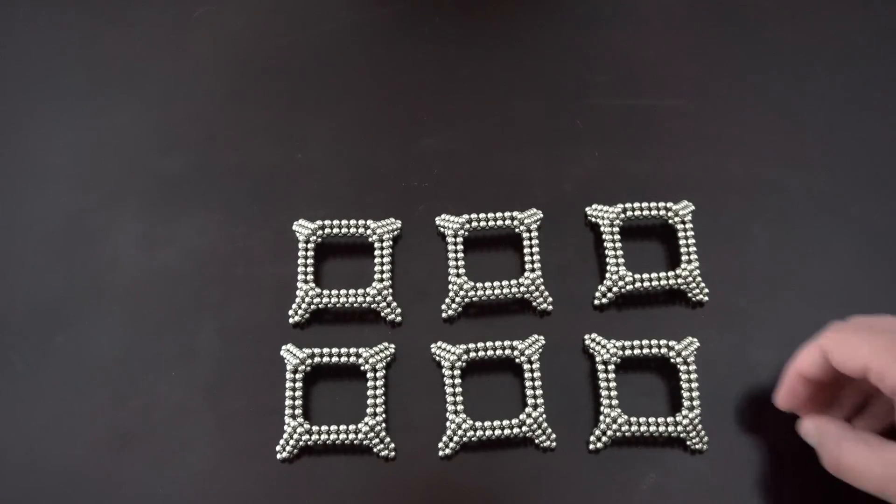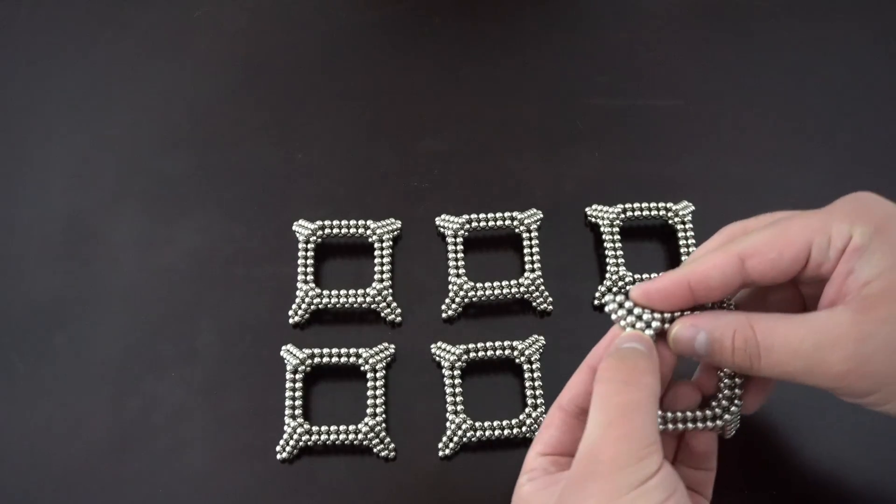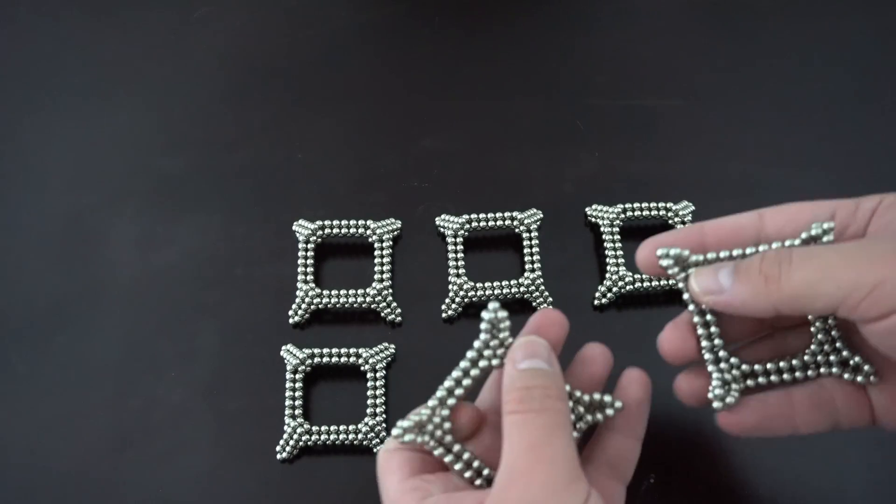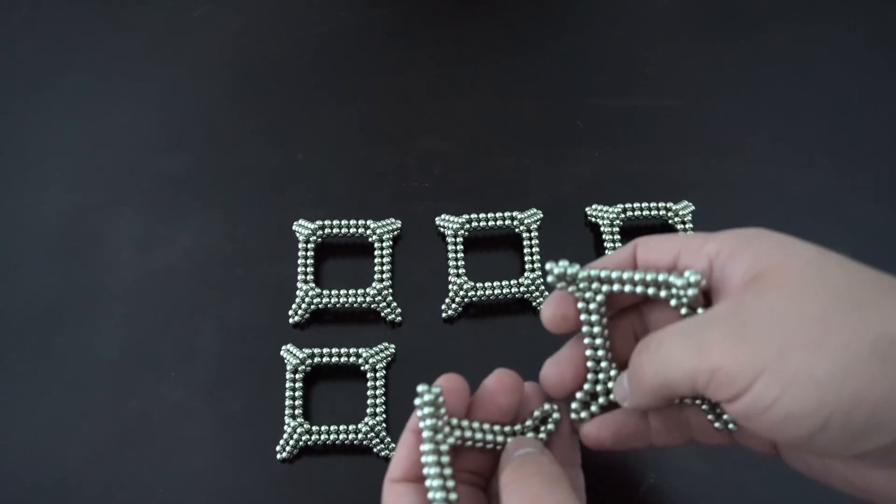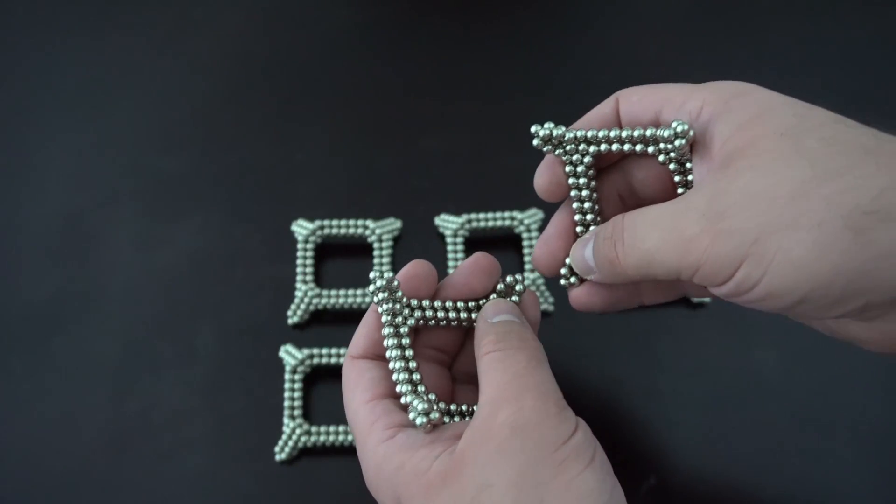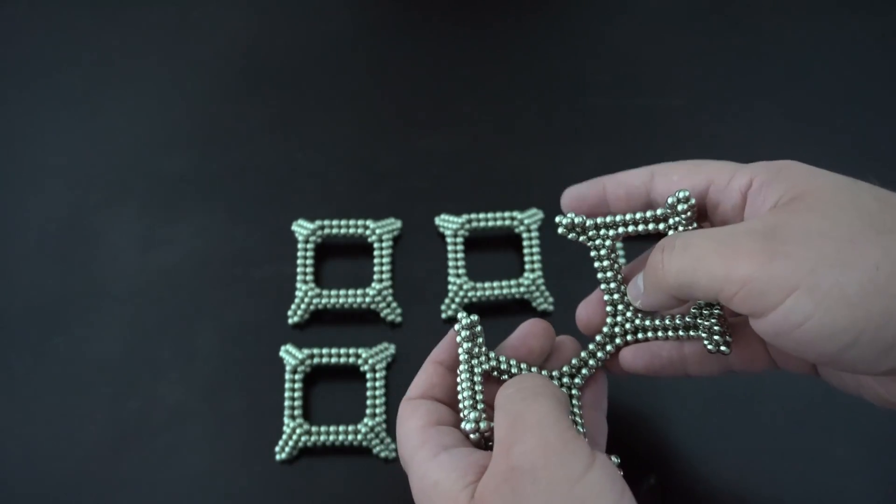Okay, now that you made all six of these, you can go ahead and start attaching them together to form the final shape. Take two of them and these legs go together exactly like you might expect. Do a third one to join these two edges together.